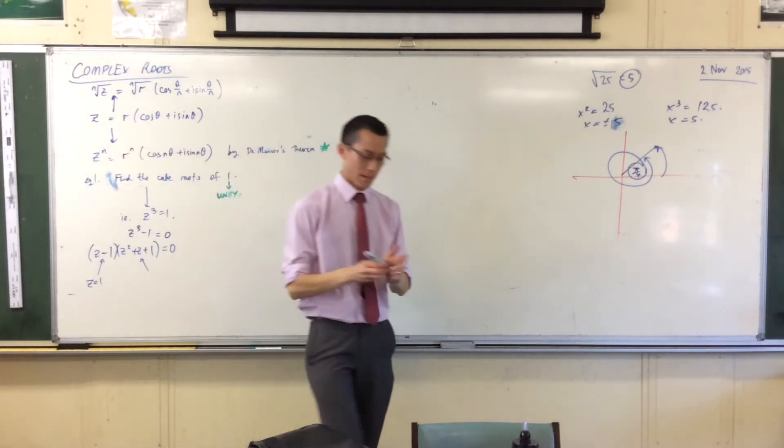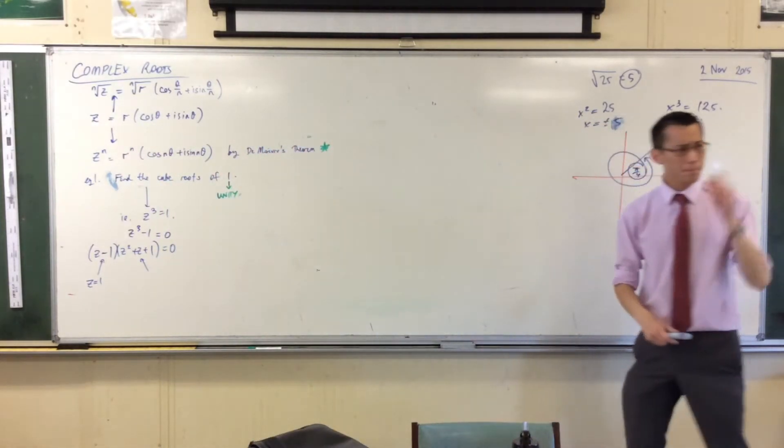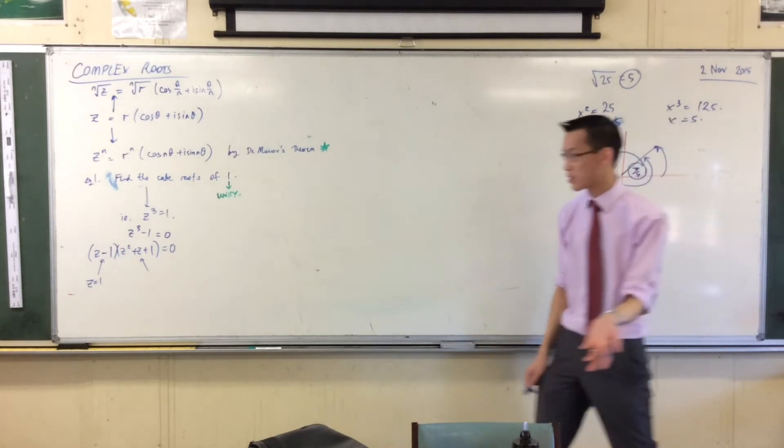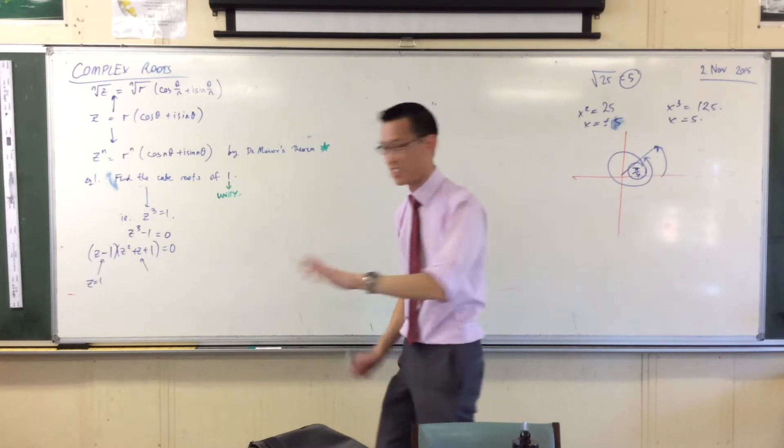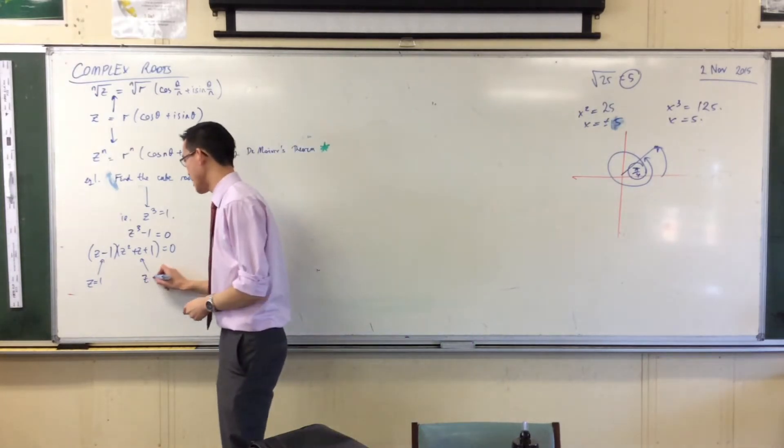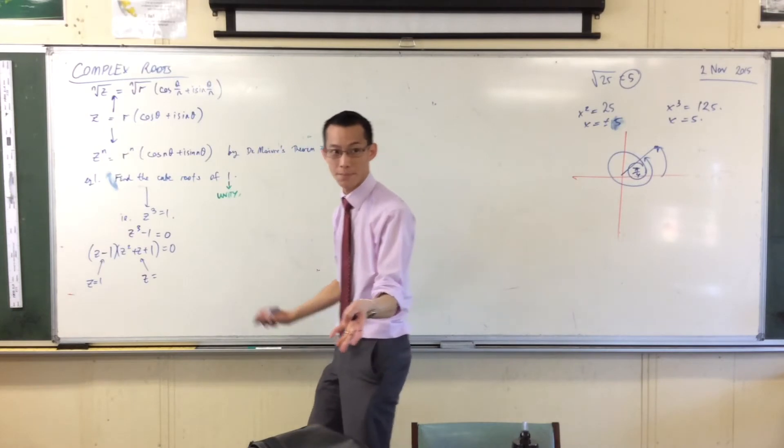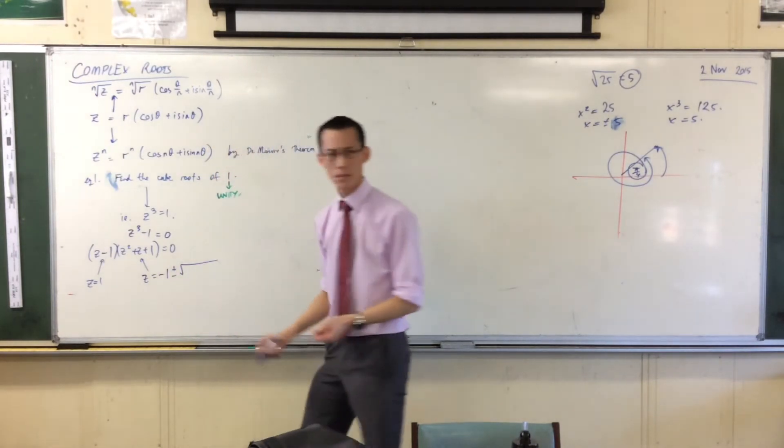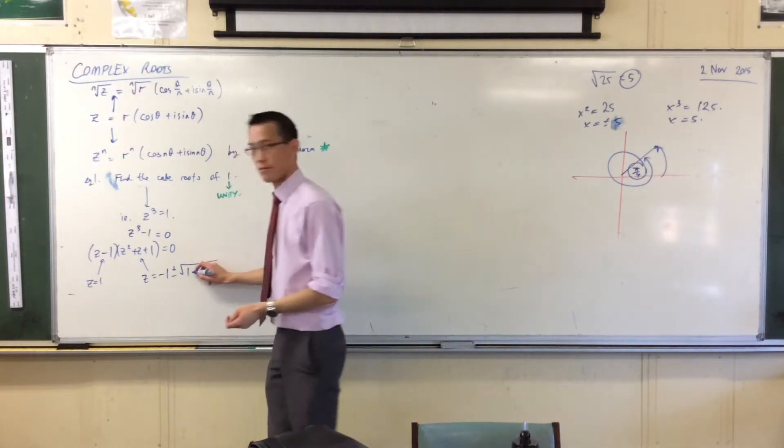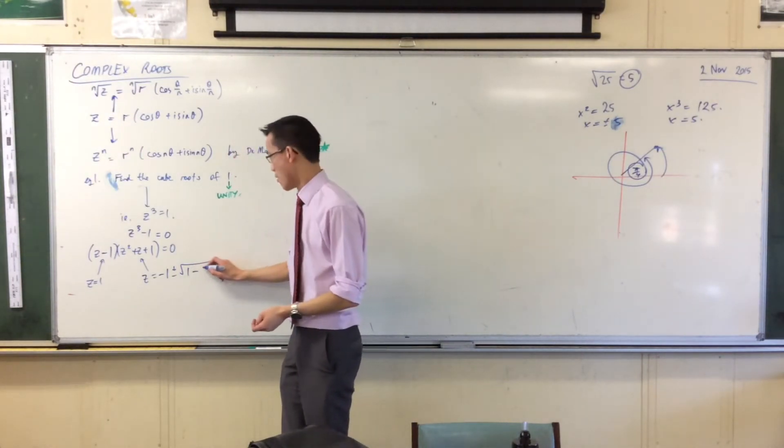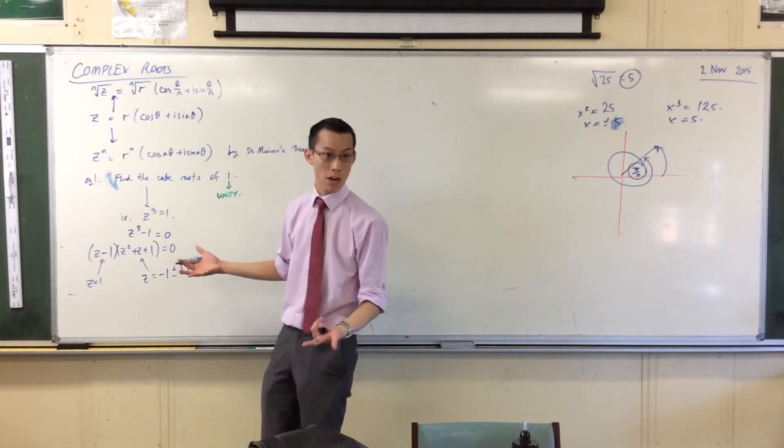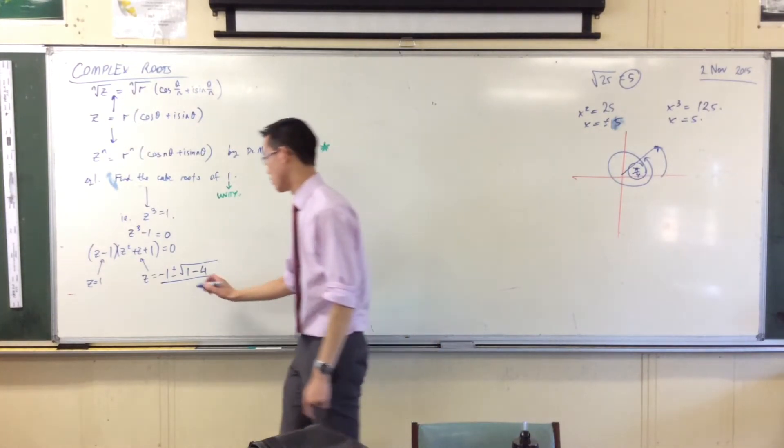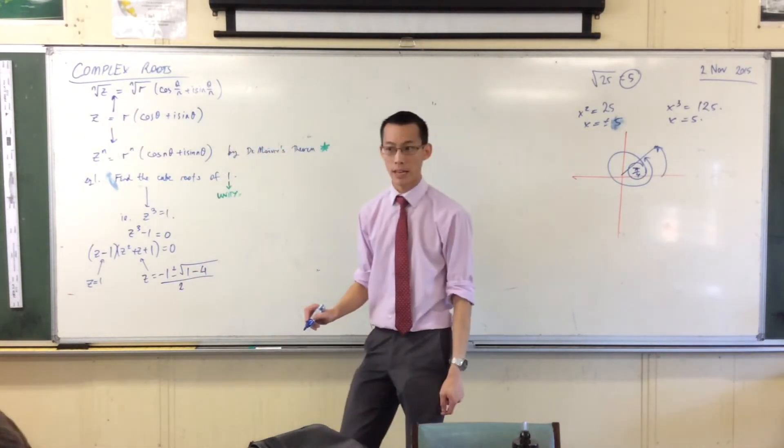But out of this guy, I can either complete the square or I can just jump in and do the formula. That'll give me a solution. It's going to have complex solutions, but that's fine. So I'm going to say z equals. Help me out. Quadratic formula. Minus b plus or minus square root of b squared minus 4ac. Both of which I want.